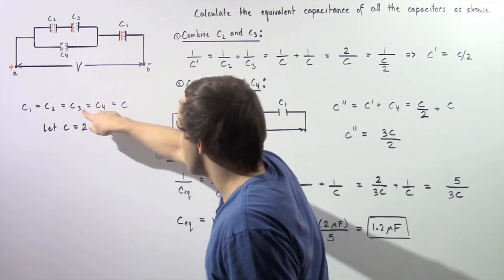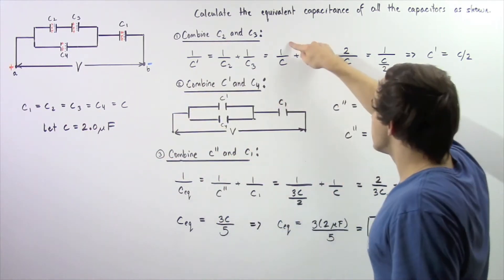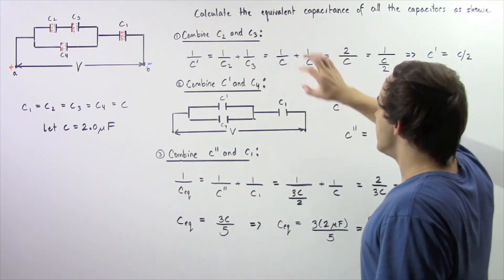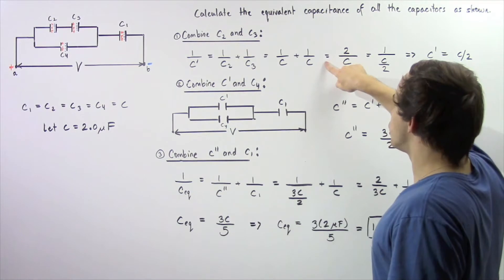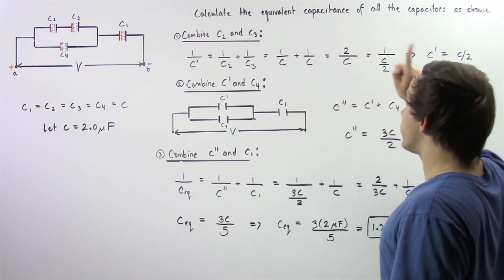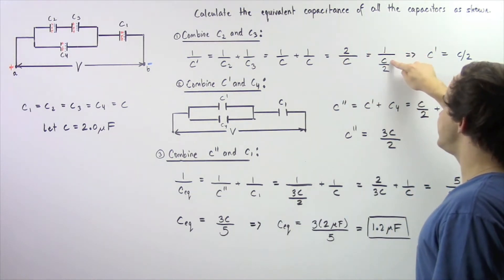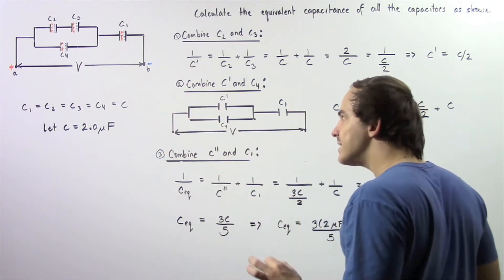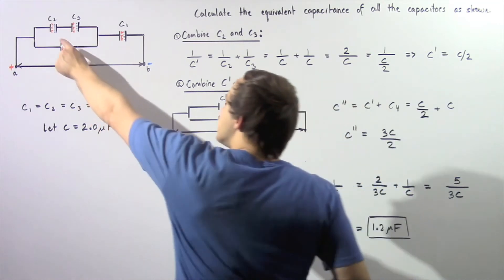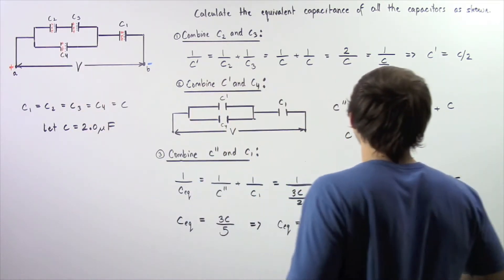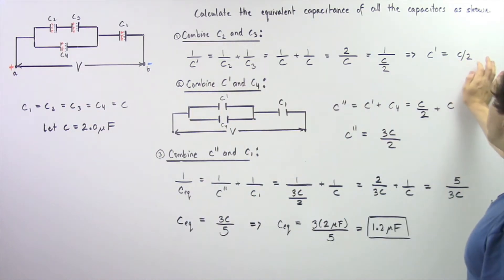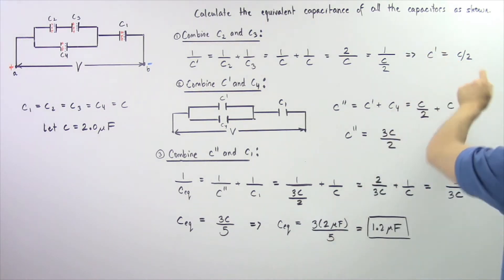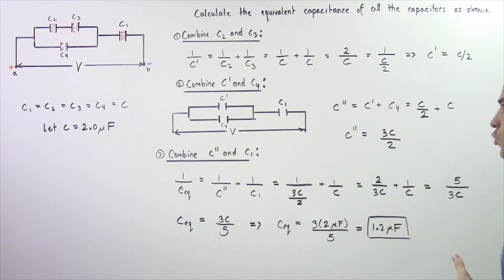Since C2 equals C3 equals C, this becomes one over C plus one over C. Combining these fractions gives two over C, or equivalently one over (C divided by two). So the equivalent capacitor replacing these two is C prime equal to C divided by two.